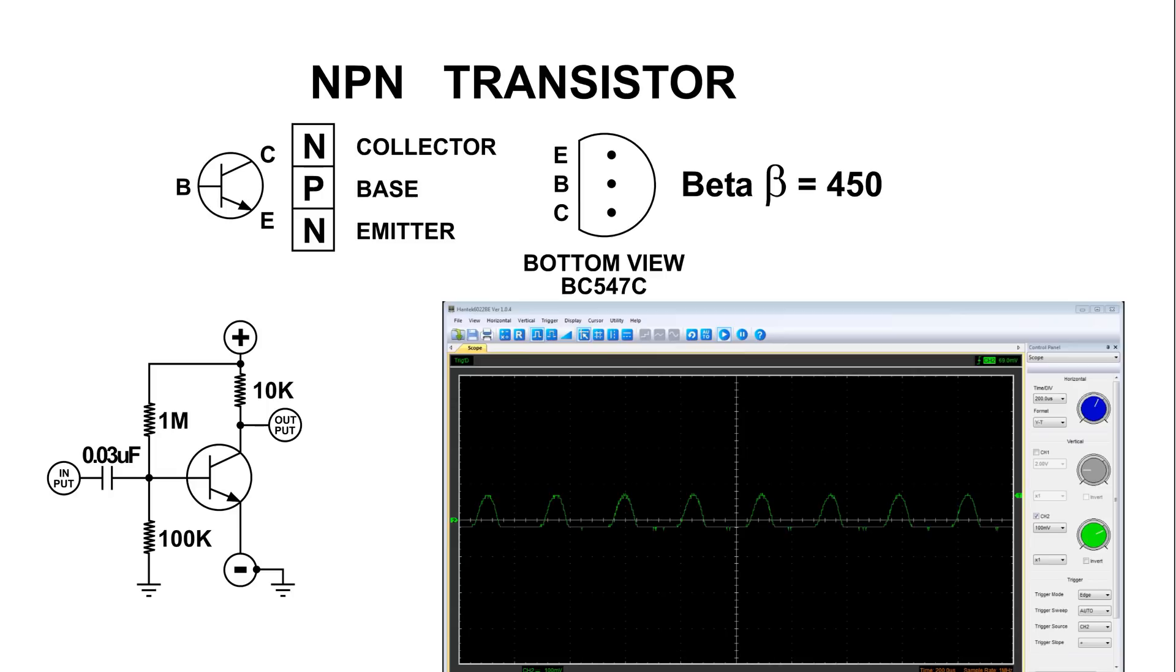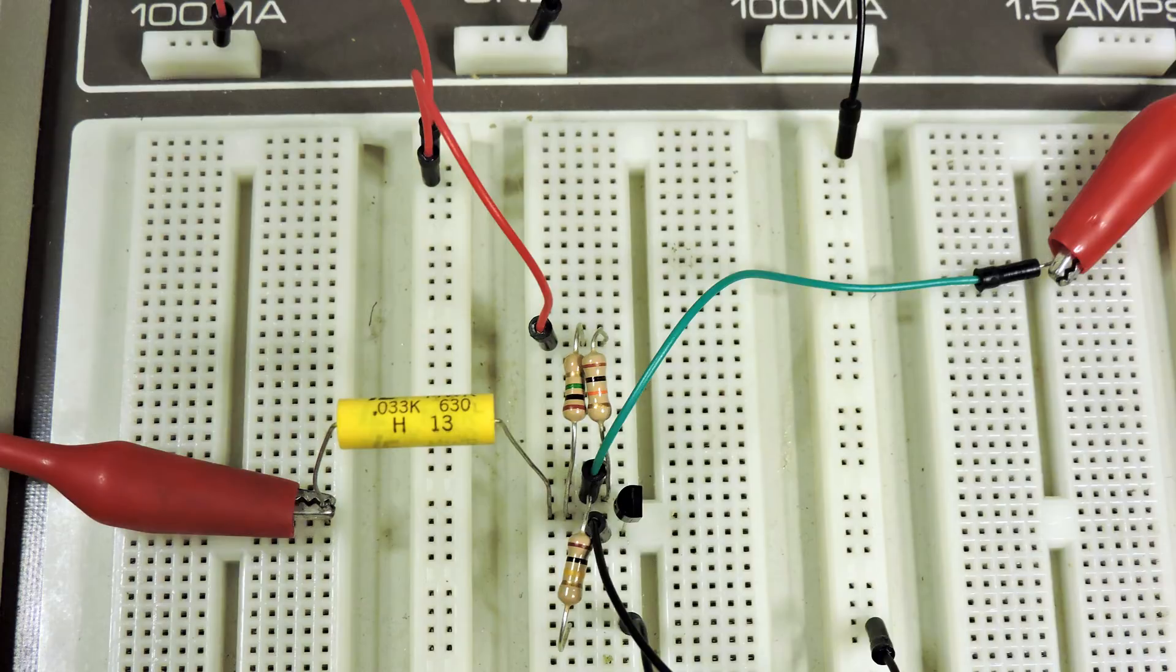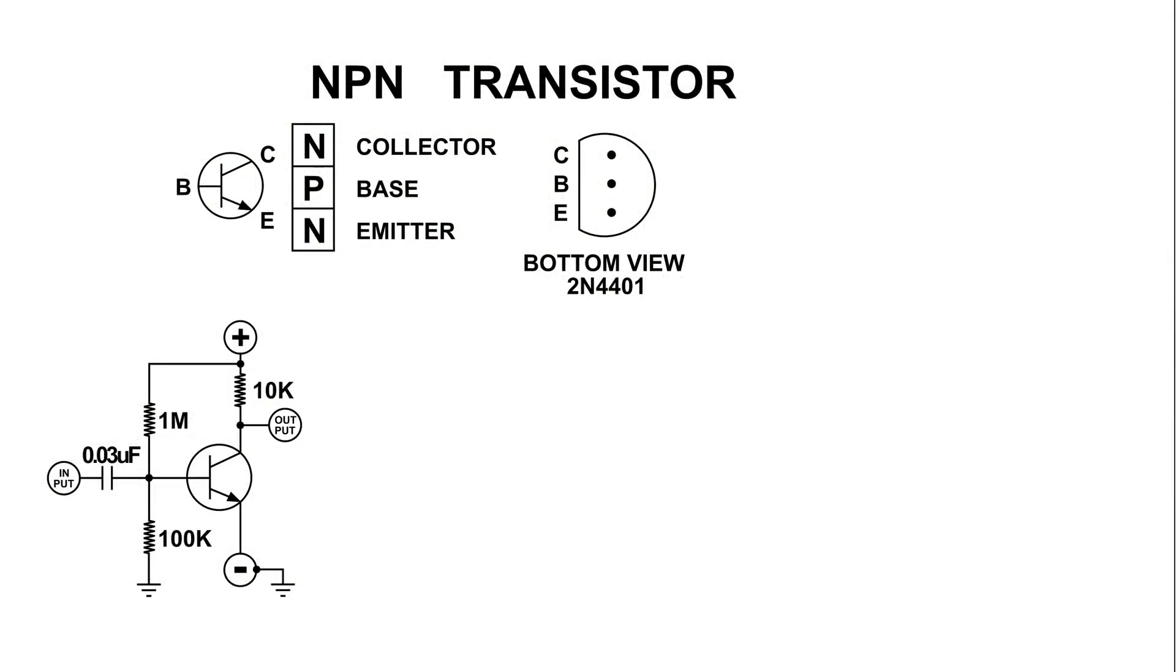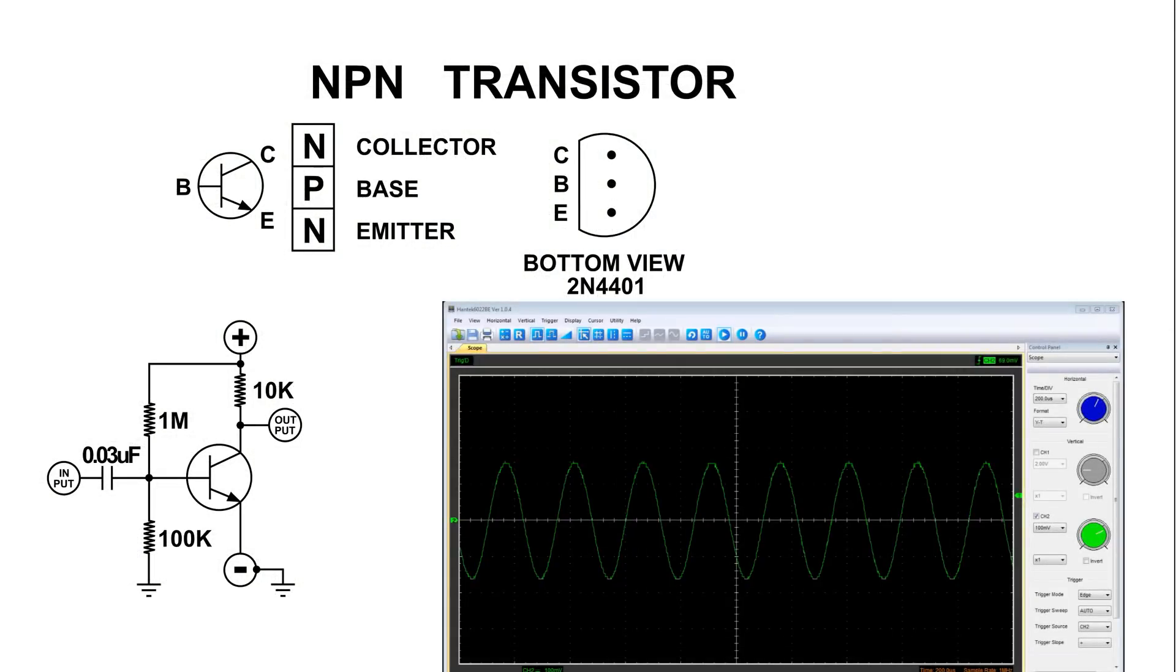So again, when you want to replace a transistor and the one that you need is not available, look up the specs for the one that you need. And as close as possible, pick a transistor that matches its specifications. Thanks for watching.